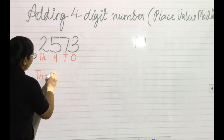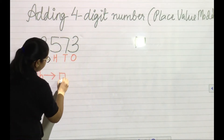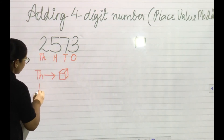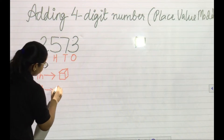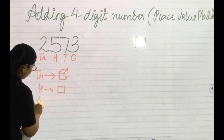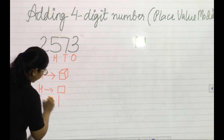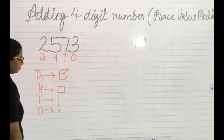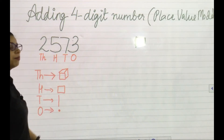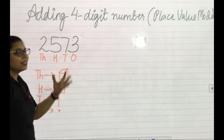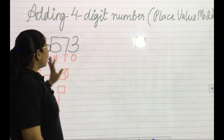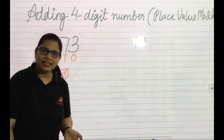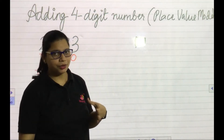Our block model for thousands will be a cube. For hundreds it will be a square. For tens it will be a bar or line. And for ones it will be a dot. These are the block models for representing different places, and we will be using these block models when adding numbers with the place value model.